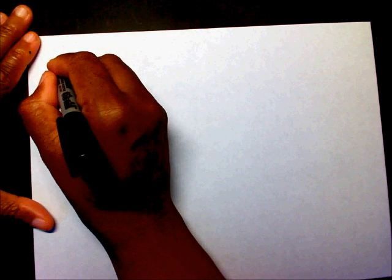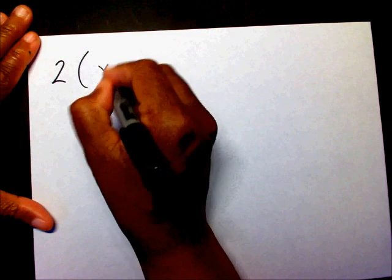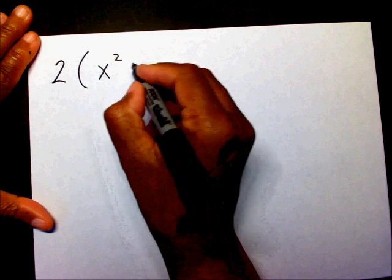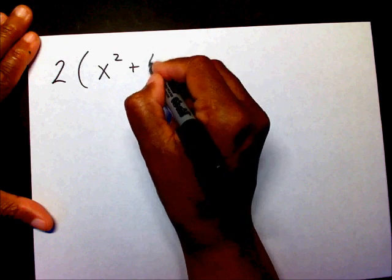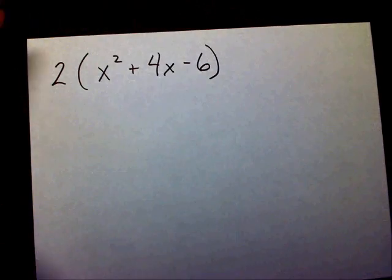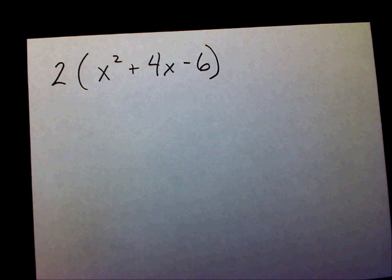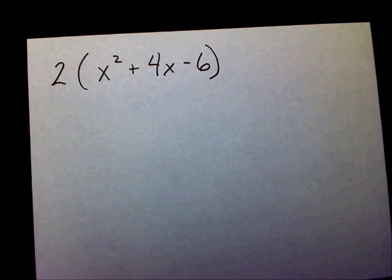Let's multiply 2 times x squared plus 4x minus 6. I'm going to show you two different methods to do this — the way that your teacher normally shows you, and then another method.